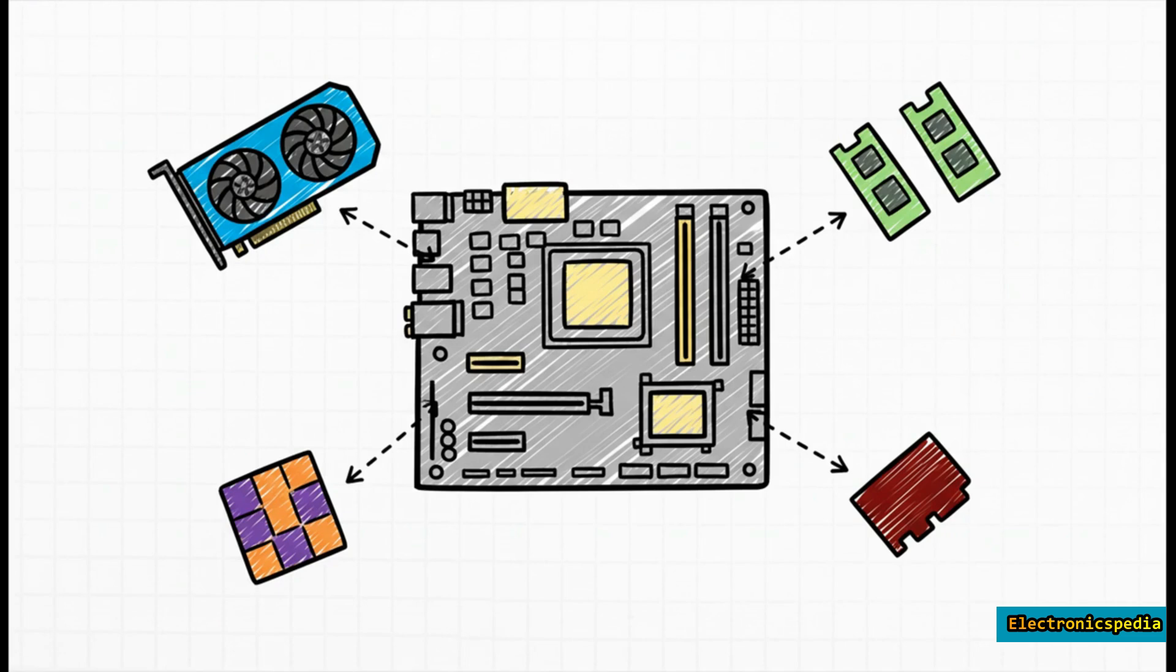When you get right down to it, enumeration is the absolute unsung hero of modern computing. It is the reason you can buy a graphics card from one company, a network card from another, and a motherboard from a third, and they all just work together. This silent, lightning-fast negotiation is the bedrock of the plug-and-play world we totally take for granted.